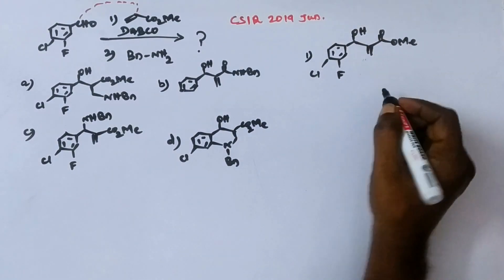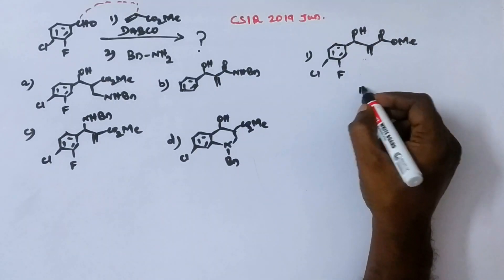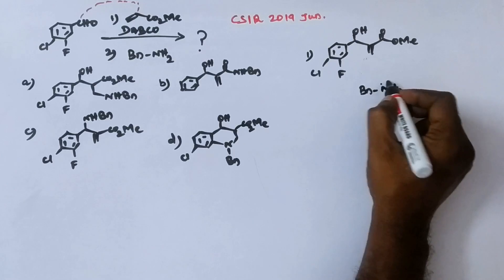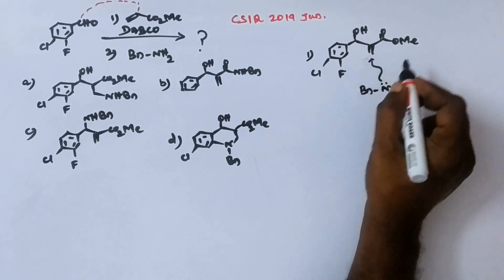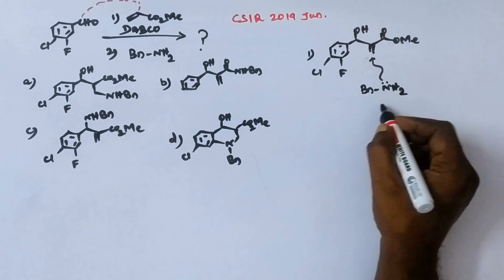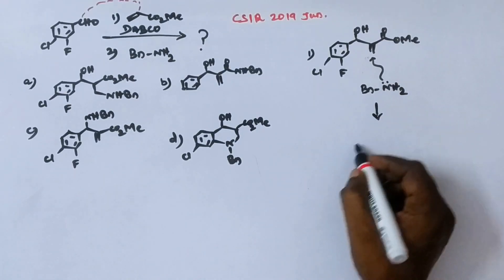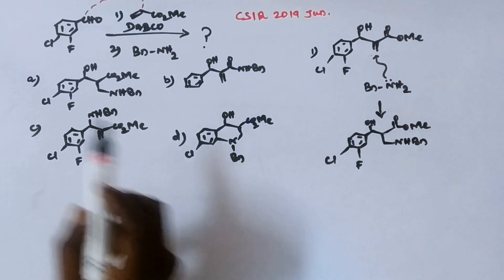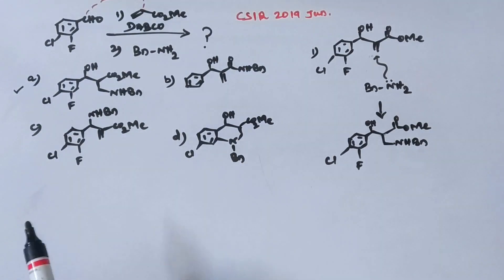If it reacts with benzylamine, the second step. A Michael reaction. Because this is an acrylate, a Michael acceptor. So the product of Michael addition is, this is the product of Michael addition. It is present in option A. So A may be the answer.